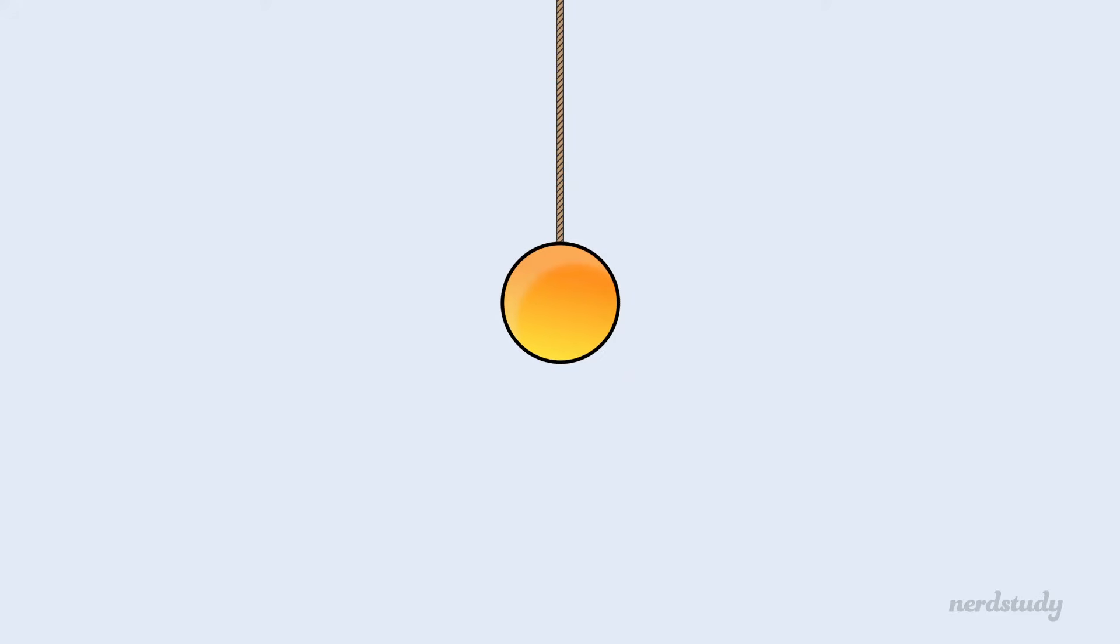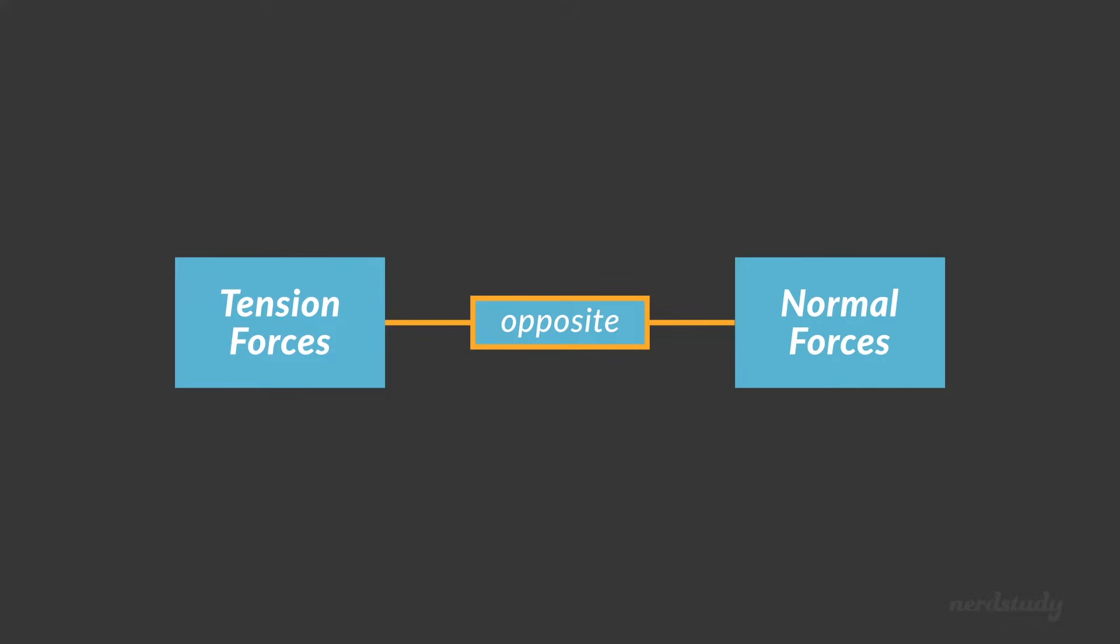So any force that appears as a result of pulling on a rope, a string, or anything similar to that is called tension. Actually, we can think of tension forces as being, in a limited sense, the opposite of normal forces.